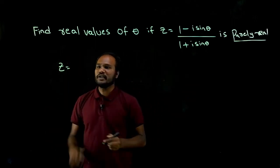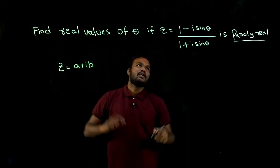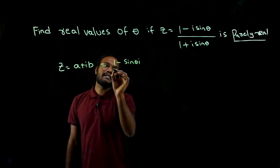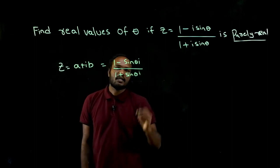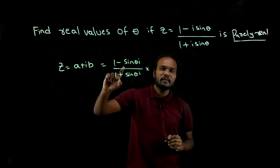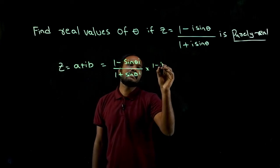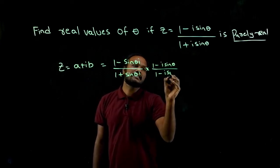What we need to do is convert into the form a plus ib. So what is given? One minus sine theta times i divided by one plus sine theta times i. In the denominator we also have a complex number, so multiply by the opposite. If there is a plus, take negative. One minus i sine theta divided by one minus i sine theta.